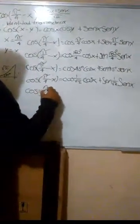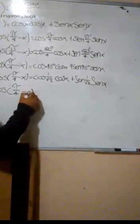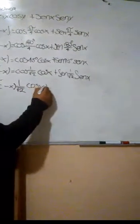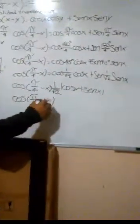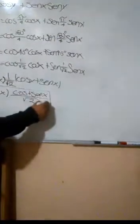Una vez que tenemos esto, factorizamos. Como pueden ver por estos dos que tenemos aquí quedaría de la siguiente manera. Realizamos la multiplicación y quedaría de esta manera.